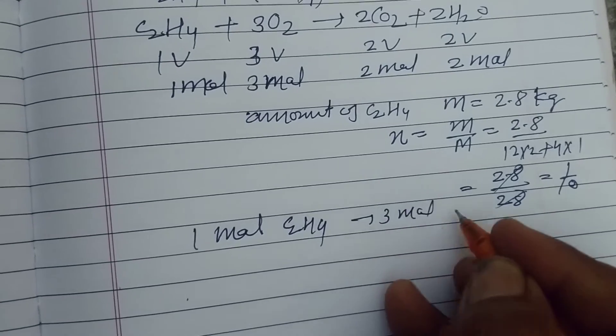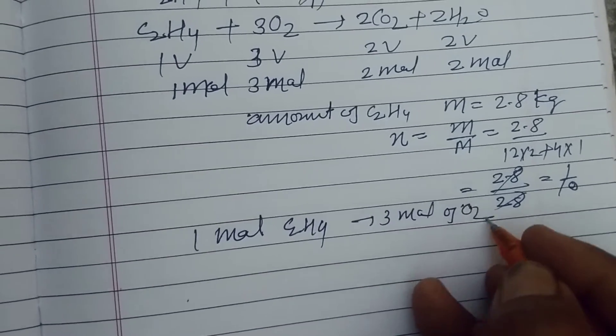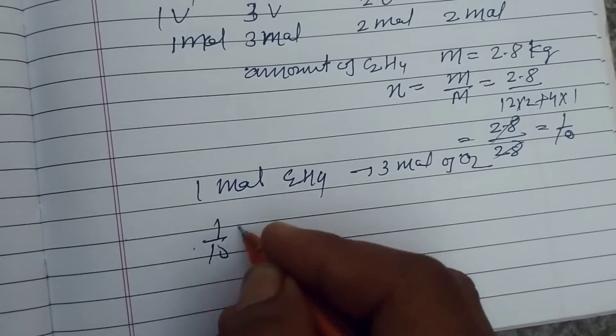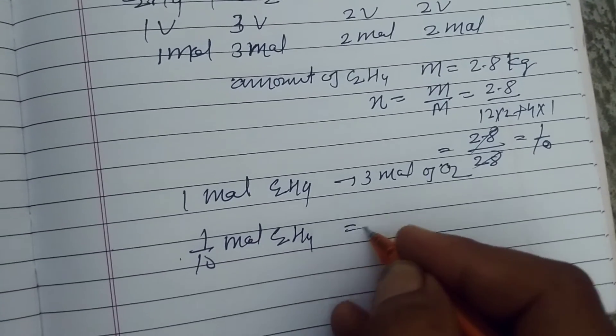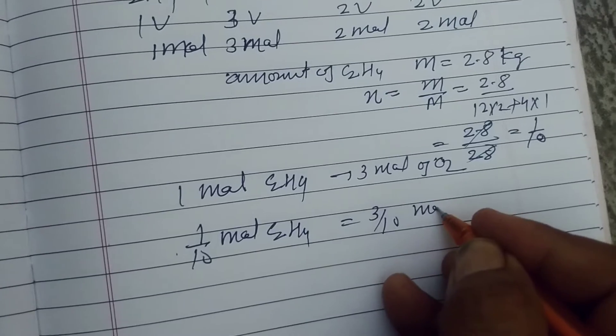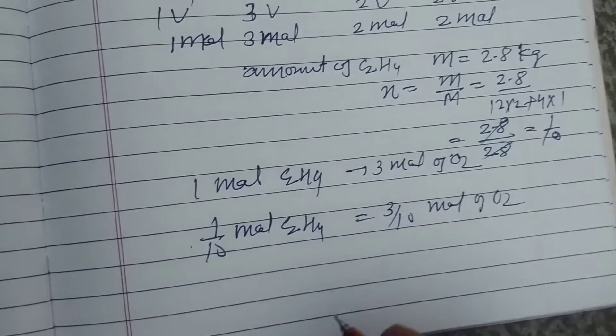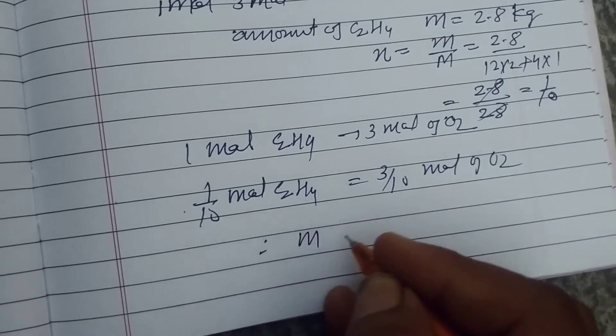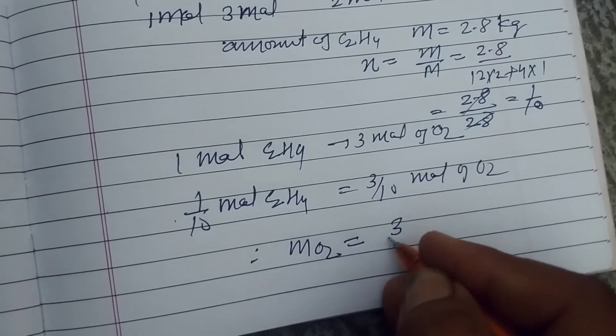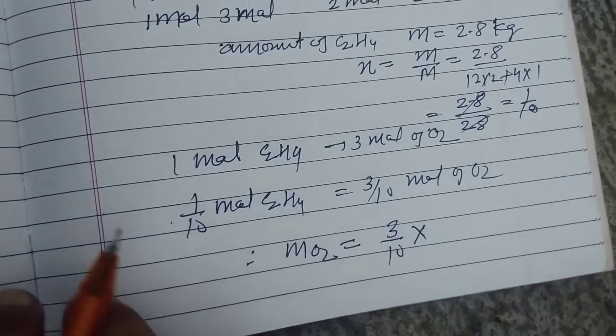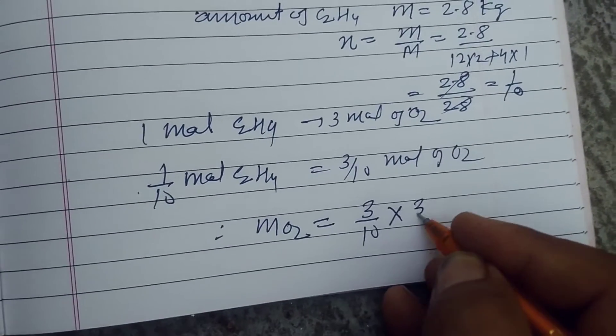Therefore, 1/10 mole C2H4 requires 3/10 mole of O2. So mass of O2 equals 3/10 into molecular mass of O2, so this is 32.